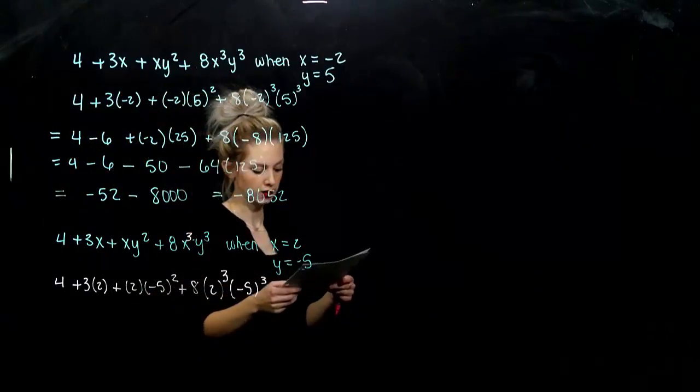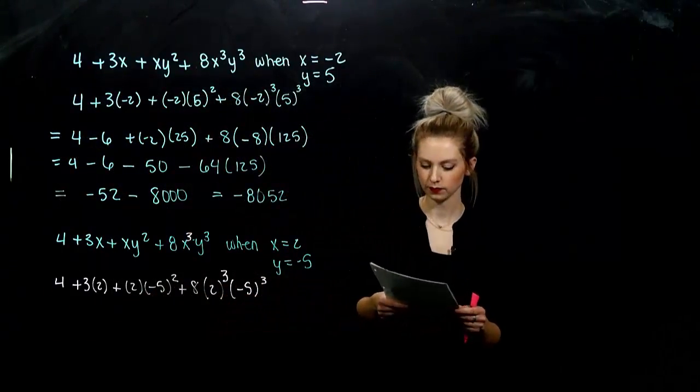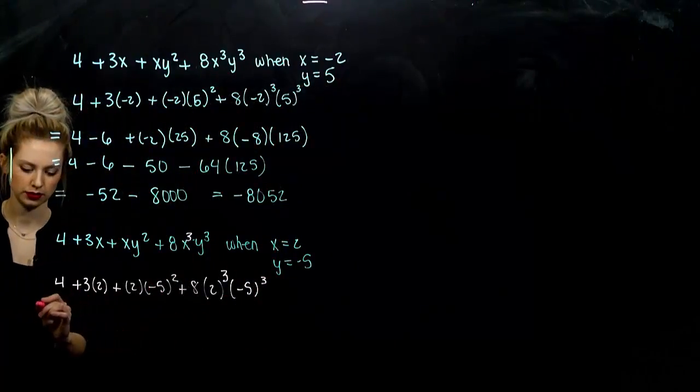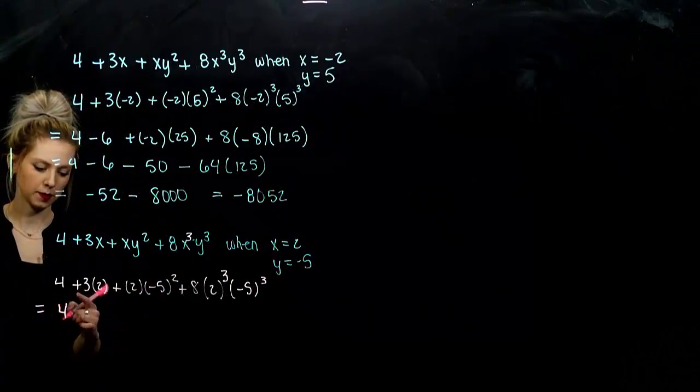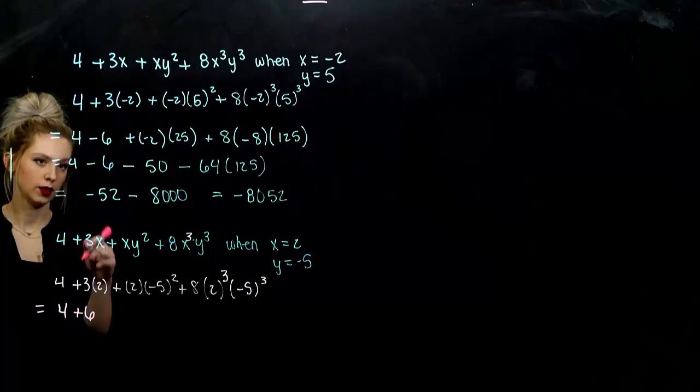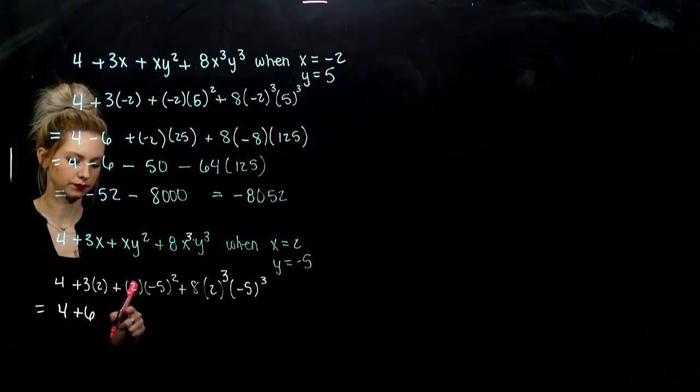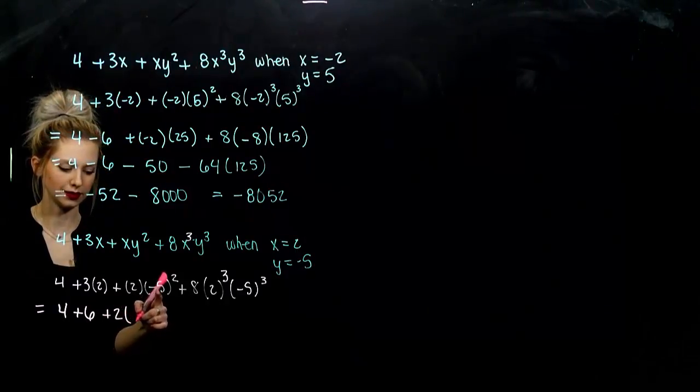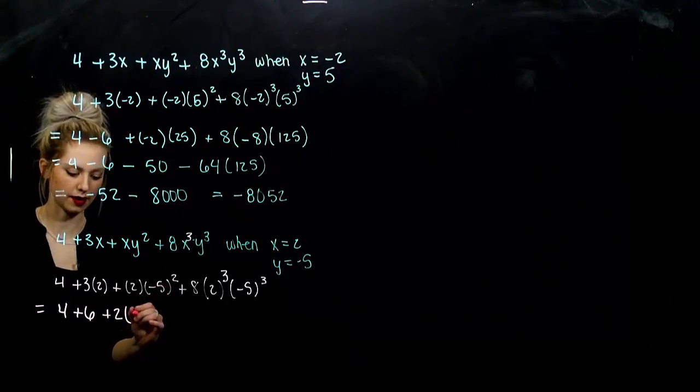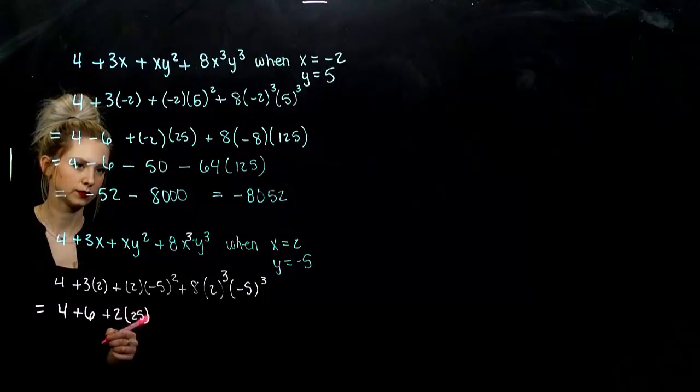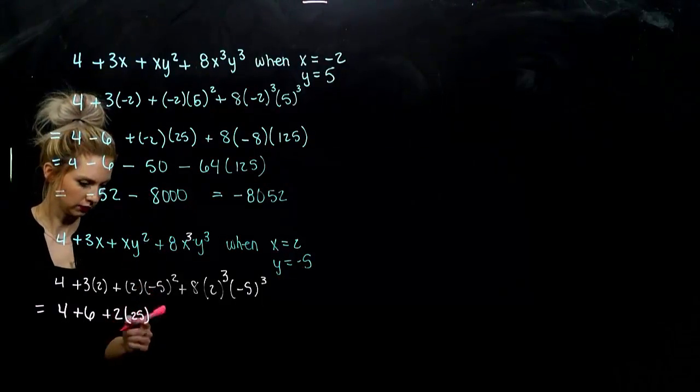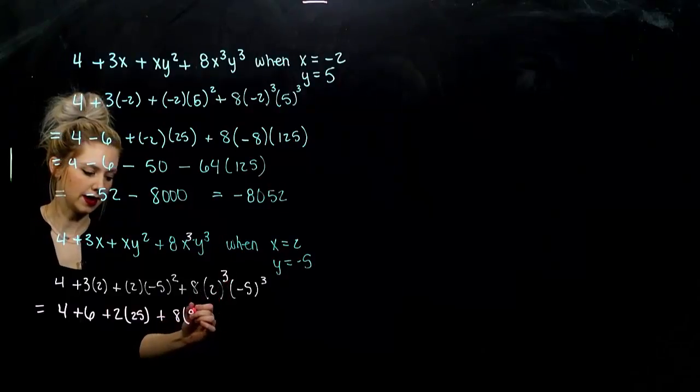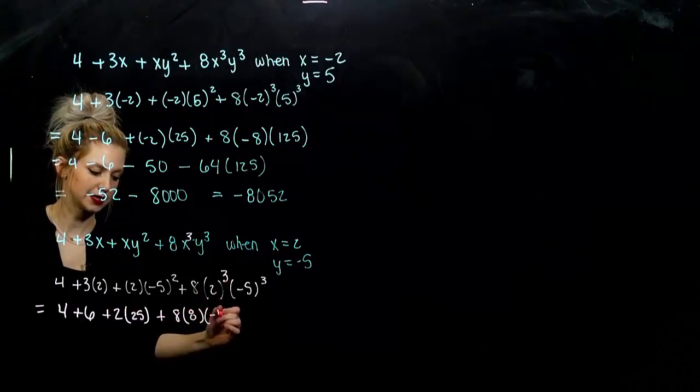Same exact polynomial that we had before, but different values. So what signs are going to change? 4 is staying the same, but I'm adding 6 now, when before I was subtracting. And I'm adding 2 times what value? Negative 5 times negative 5 is 25. So I'm adding 50. And what do I get out of here? 8 times 8 times negative 125.